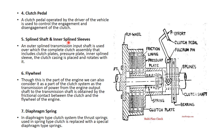Spline shaft and inner spline sleeve: an outer spline transmission shaft is used over which the complete clutch is assembled. That is the transmission spline. It includes the clutch plate, pressure plate, and inner spline sleeve. The clutch casing is placed on and rotates with it, along with the clutch pressure plate. The clutch plate also runs over the splines.